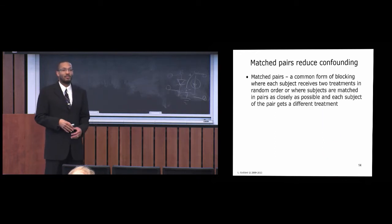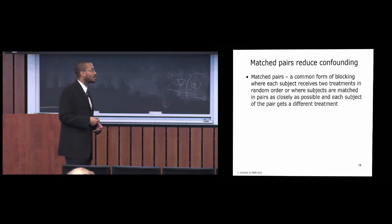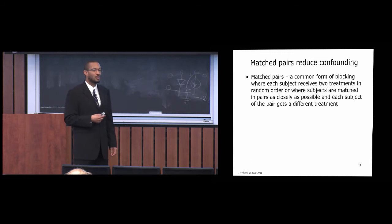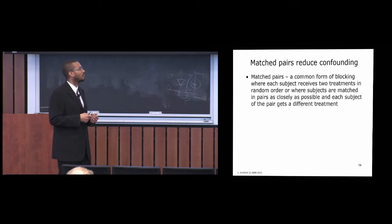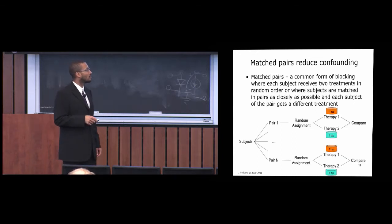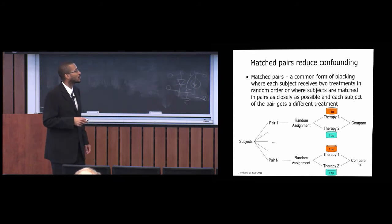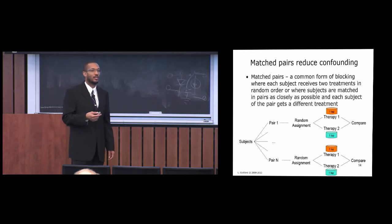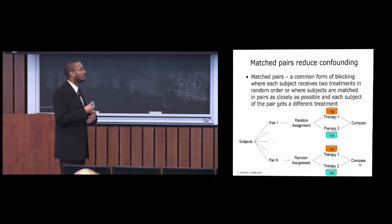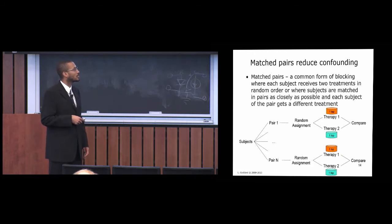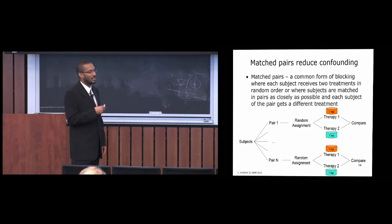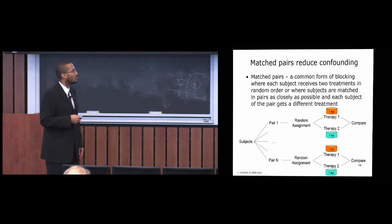Another approach is the matched-pair design, a common form of blocking where the subject receives two treatments in sequence in random order, or you use a pair of twins — people identical in every way except the treatment. You randomly assign whether they receive the hair growth formula or the shampoo, and compare the results. Across multiple pairs you might find, for example, that it helps 50% of the time, leading you to further studies.